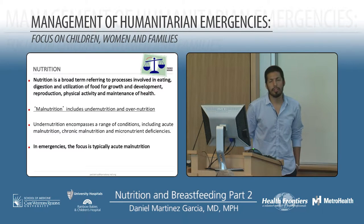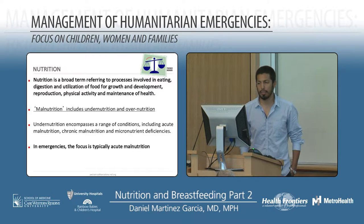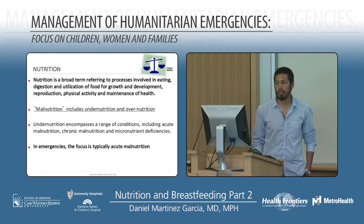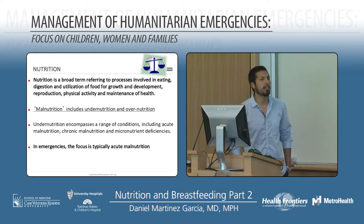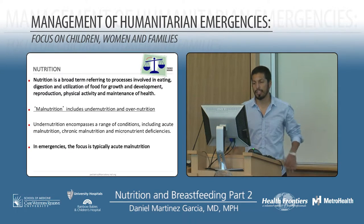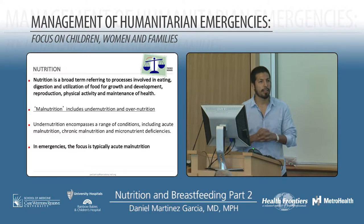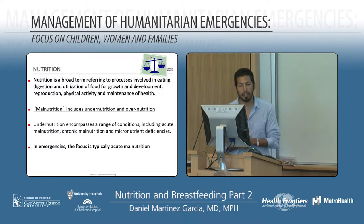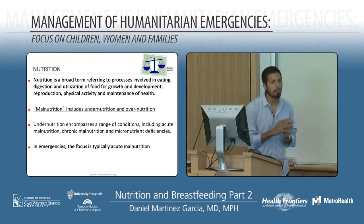So nutrition is a broad term — it involves eating, digestion, and using food for growth and development. But malnutrition normally should include both under- and over-nutrition, though sometimes we use malnutrition only for under-nutrition. Under-nutrition includes several things like acute malnutrition, chronic malnutrition, and micronutrient deficiencies. In emergencies, the focus is typically what we call acute malnutrition.